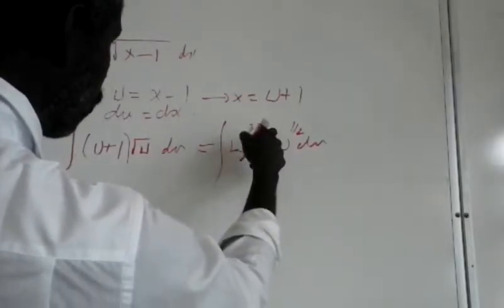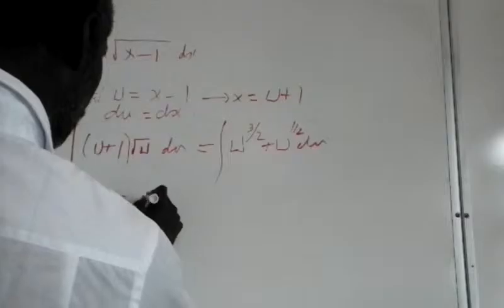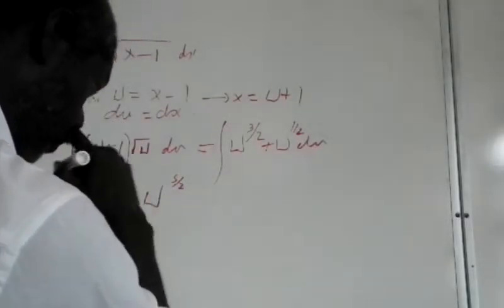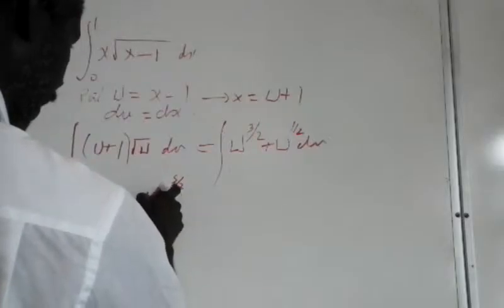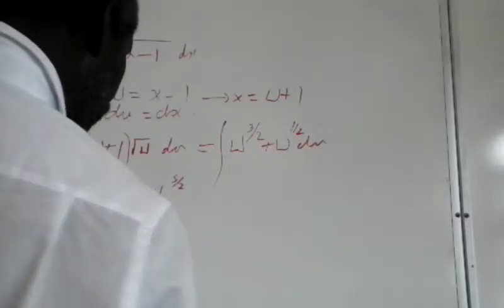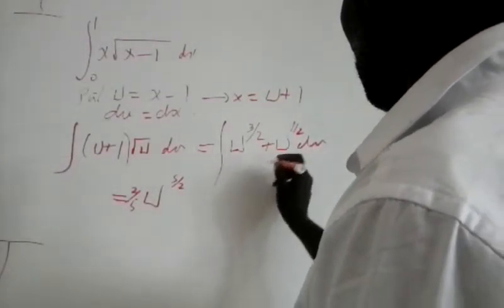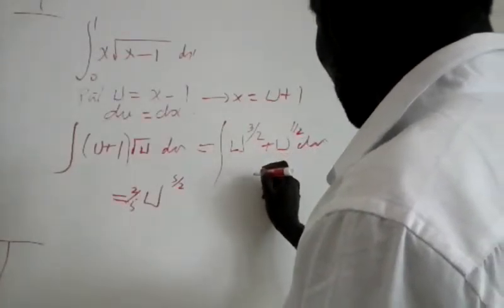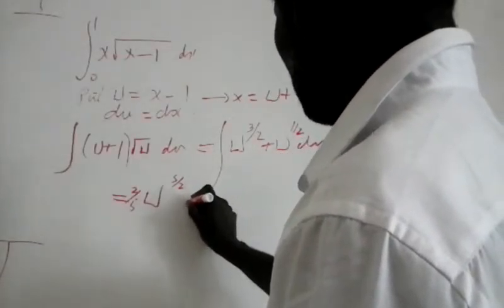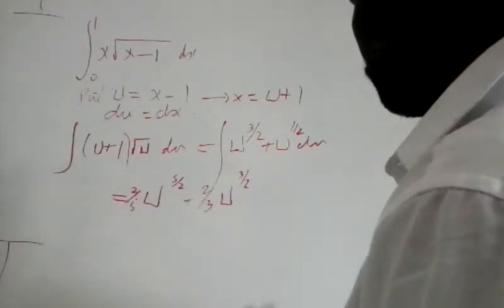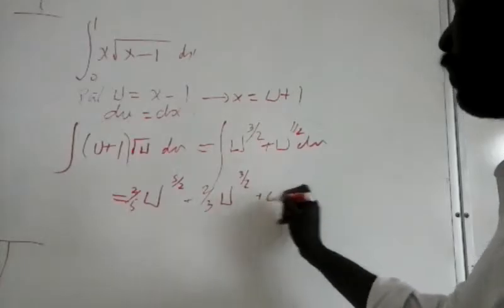And that's equal now to the integral of u to the 3 over 2, which will be u to the 3 over 2 plus 1, which is u to the 5 over 2, and we divide by that, so that will be 2 over 5 u to the 5 over 2.